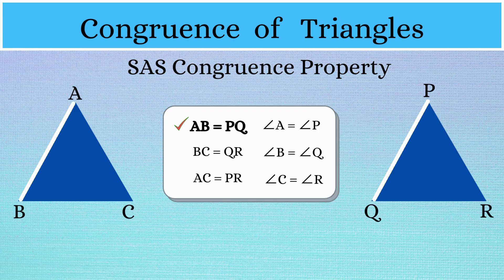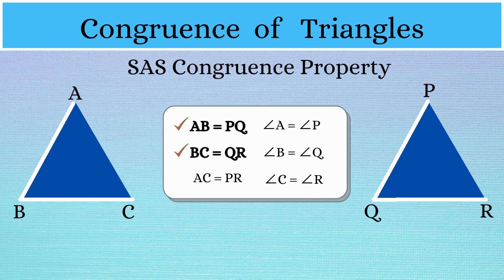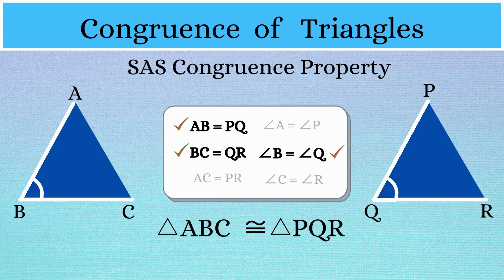Coming to our example: side AB is equal to side PQ, side BC is equal to side QR, and angle B is equal to angle Q. This will make both the triangles congruent.